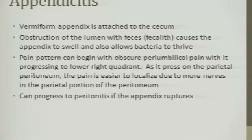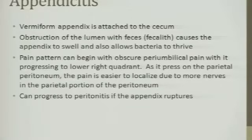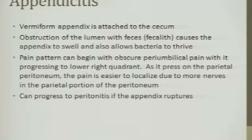Instead of diffuse abdominal pain at the beginning stages when it hasn't gotten big enough to touch the wall, people feel vague pain. Then it hurts right here — right lower quadrant — because there are more nerves that are more sensitive in the parietal peritoneum. That's why it goes from that diffuse pain to a specific, more localized pain.